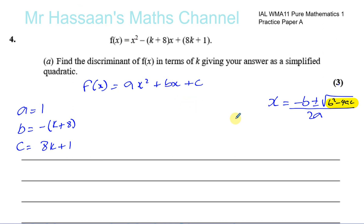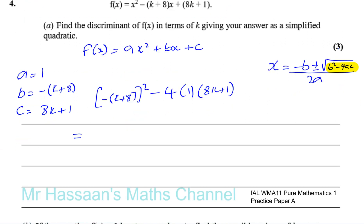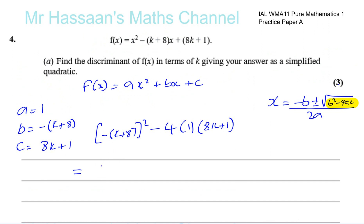So b squared minus 4ac: we're going to have minus (k plus 8) all squared — it's going to become positive anyway — minus 4 times a times c, which is 8k plus 1. That gives us k plus 8 squared, which expands to k squared plus 16k plus 64.